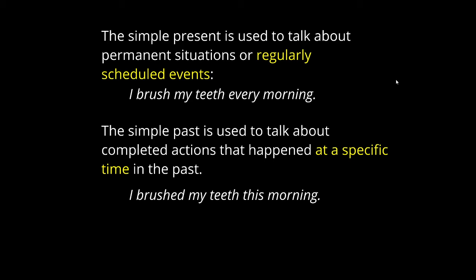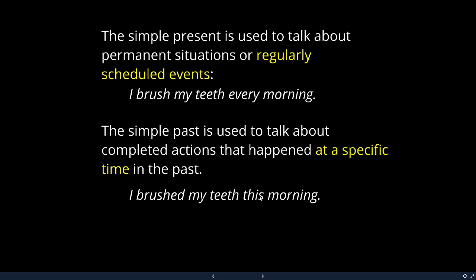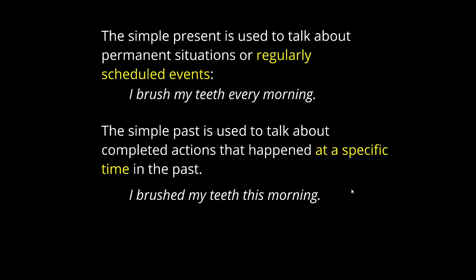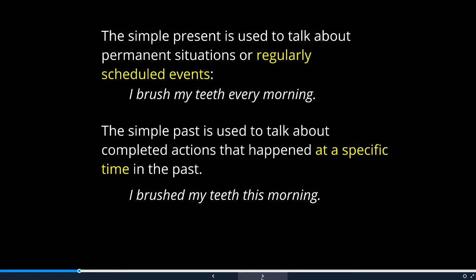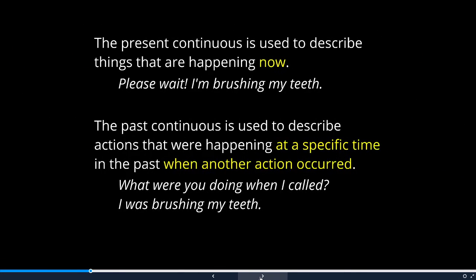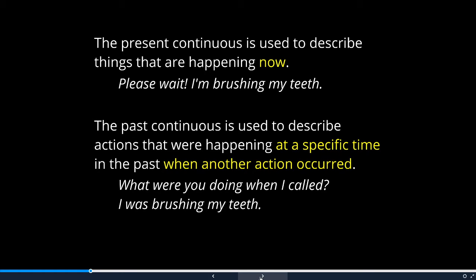When we use the simple past, we often use it with time expressions: this morning, yesterday, last week, last summer, in July. To talk about things we're doing right now, we use the present continuous — 'I'm brushing my teeth' — with the verb to be plus the -ing form of the verb. Those three verb tenses — simple present, simple past, and present continuous — make up the majority of spoken English.